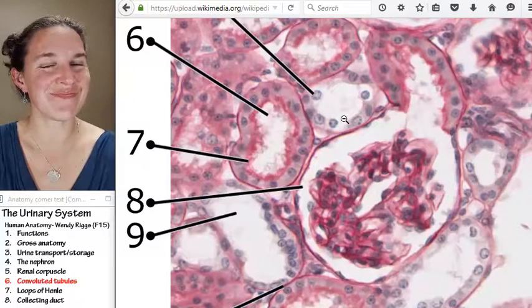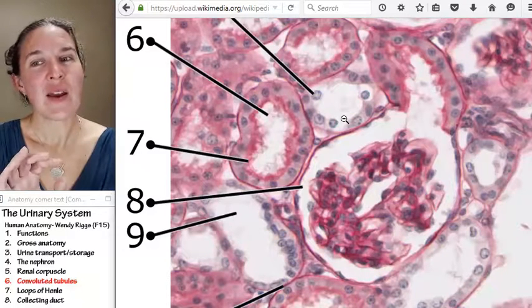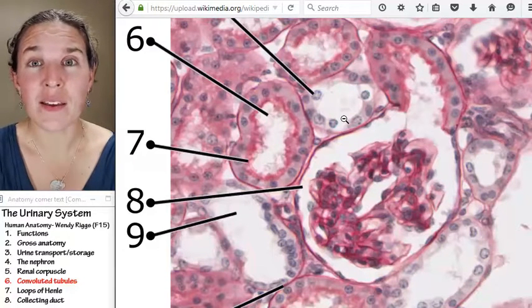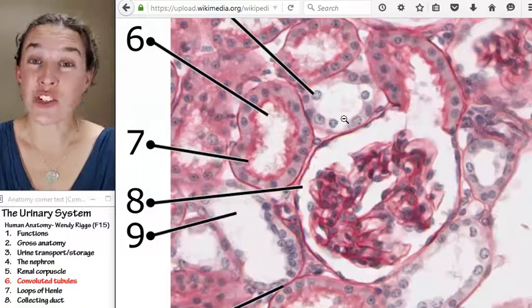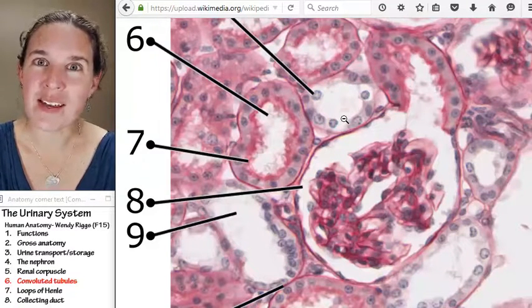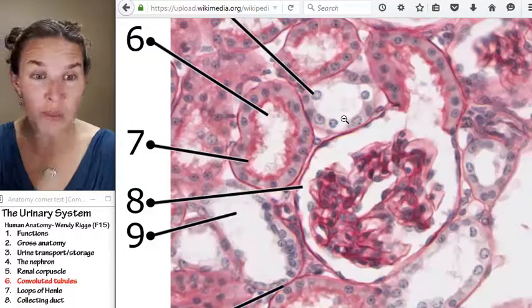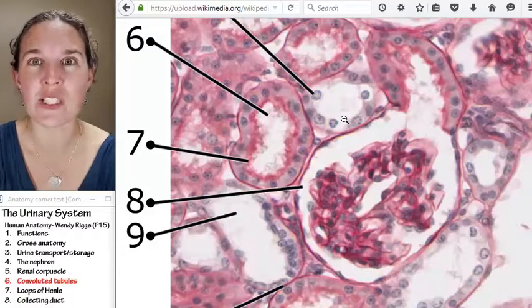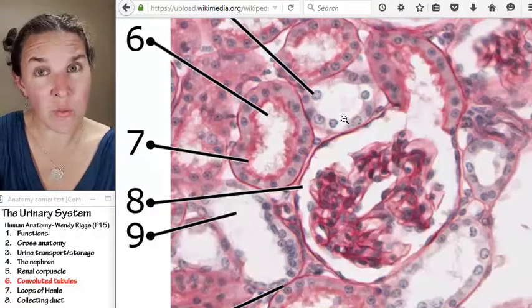Physio. Why do they do it? Physio. What are the structures that enable them to do it? Proximal convoluted, anatomy. They're covered with microvilli to increase surface area so they're more effective at reabsorption.